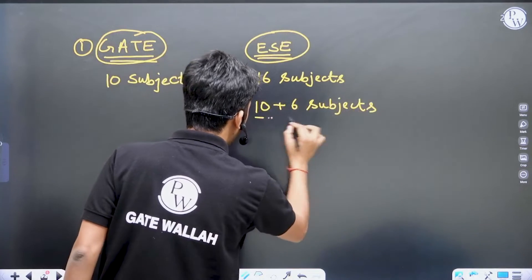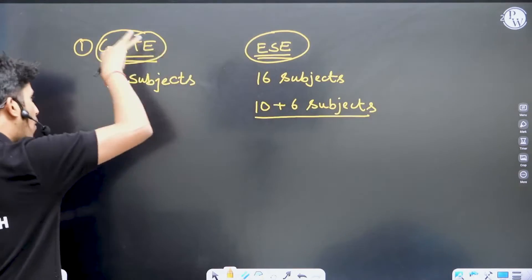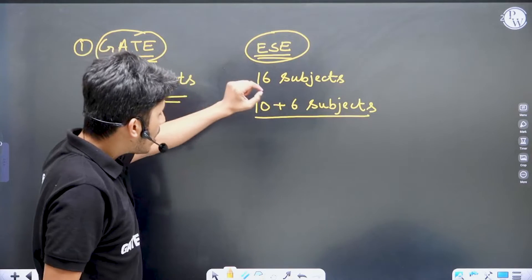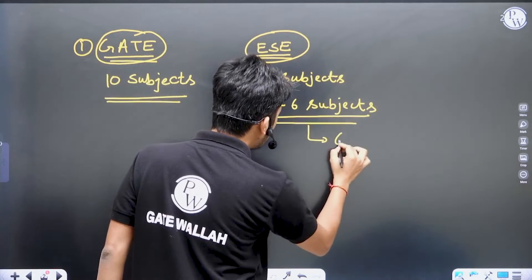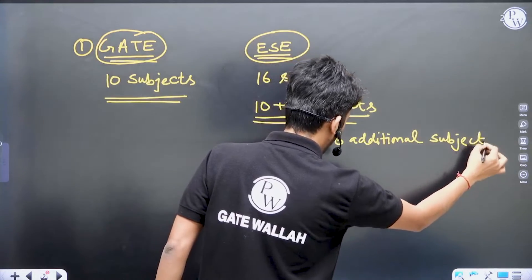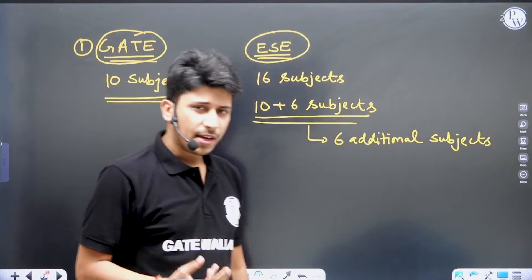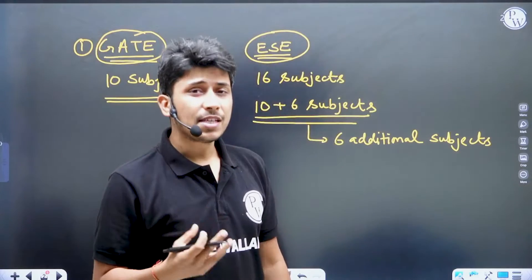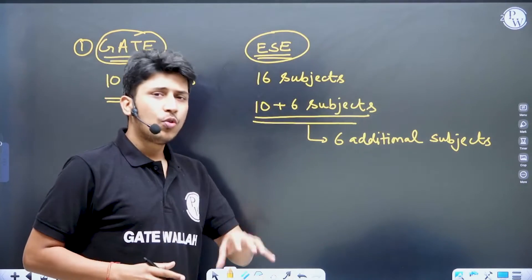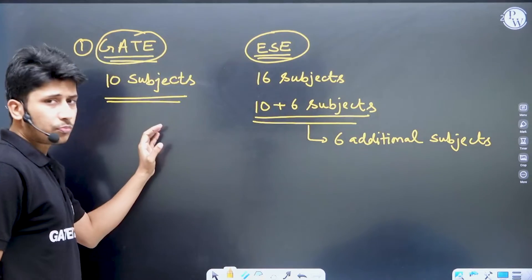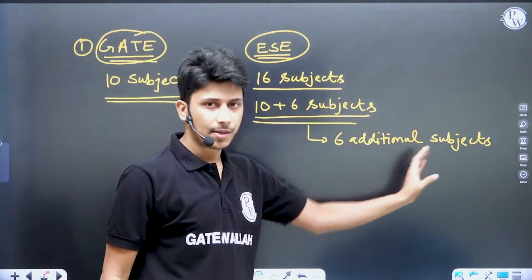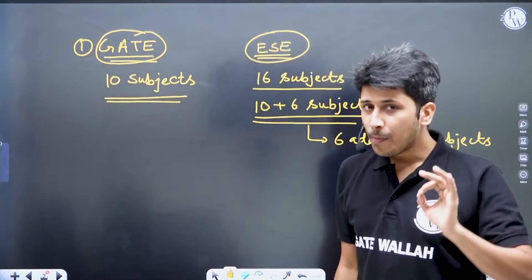These 16 subjects are not separate — they are 10 plus 6. This means if you are preparing for these 16 subjects in ESC, you are already preparing the same 10 subjects from GATE. You only have to cover 6 additional subjects for ESC preparation, whether your branch is civil engineering, mechanical, electrical, CS, IT, electronics, chemical, or anything else.